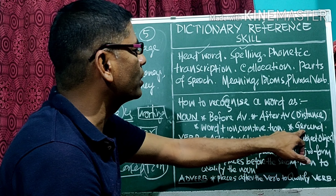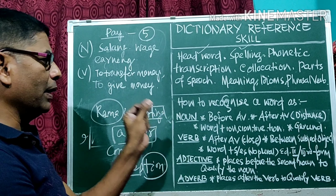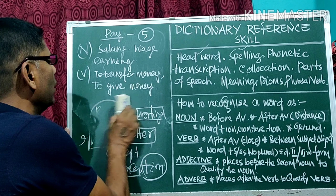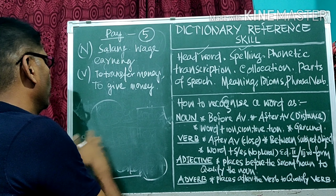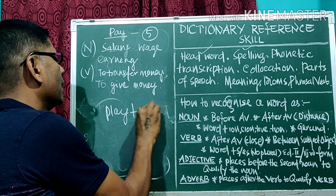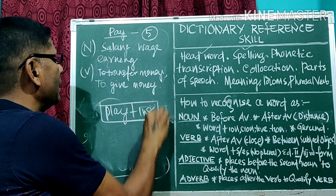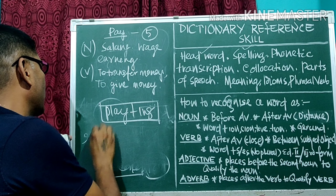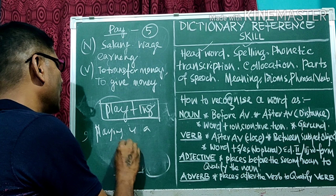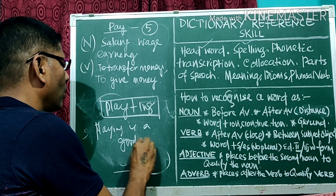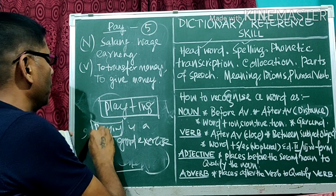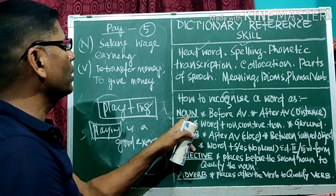The last form is the gerund. A gerund means having added '-ing' to a word, we can use it as a noun. For example, 'play' plus '-ing' becomes 'playing', and it can be used as a noun — for example, 'Playing is a good exercise.' So this is all about the noun.